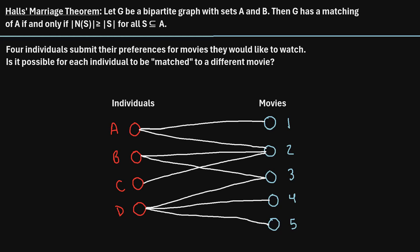In this video, I will provide a quick explanation of Hall's Marriage Theorem in graph theory. So let's start with a quick definition. Hall's Marriage Theorem says: let G be a bipartite graph with sets A and B. Then G has a matching of A if and only if the cardinality of the neighborhood of S is greater than or equal to the cardinality of S, for all sets S that are subsets of set A. That definition is a mouthful, but I'm going to show you two quick examples to illustrate what Hall's Marriage Theorem is saying.